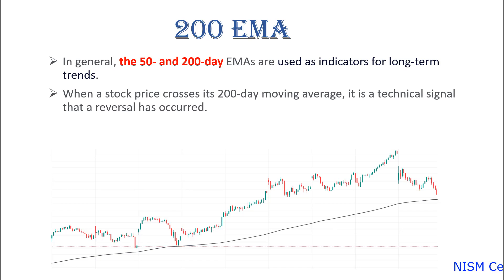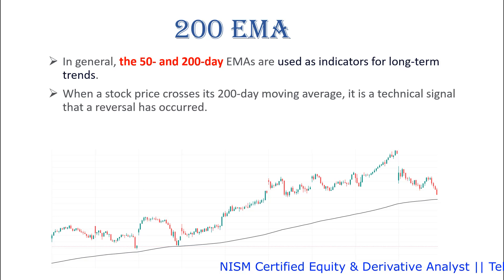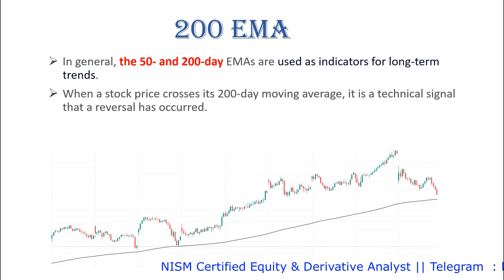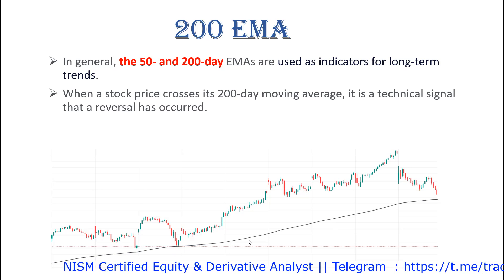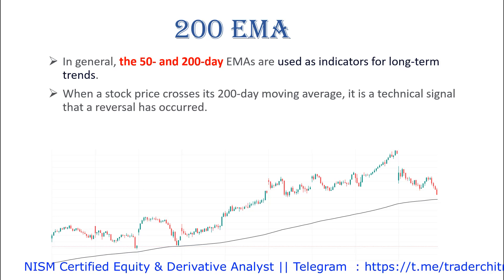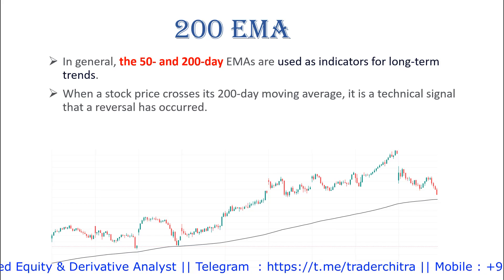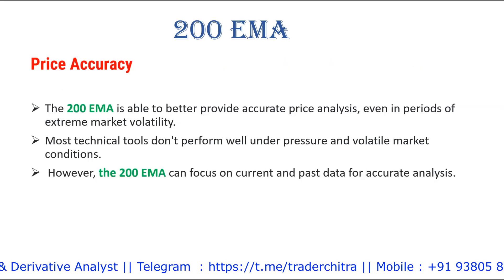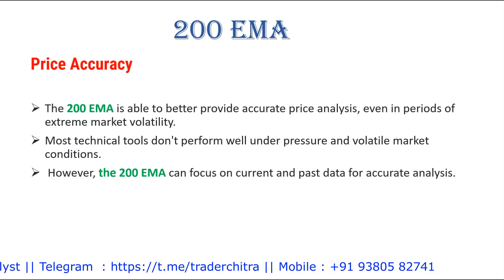What is EMA? The 50 EMA, 200 EMA — these are higher EMAs used as indicators for long-term trends. Also, when the stock price crosses its 200 EMA, it is a technical signal that a reversal has occurred. If the price is trading above the 200 EMA, that stock or index is considered bullish.